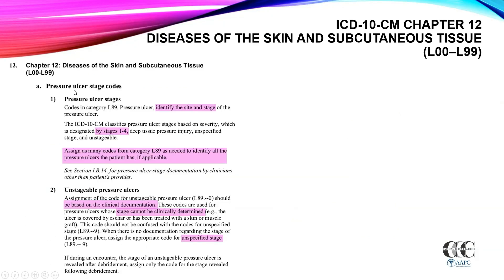Let's take a look at our coding guidelines surrounding ulcers. First, pressure ulcer stage codes: codes in category L89 pressure ulcer identify the site and stage of the pressure ulcer. ICD-10-CM classifies pressure ulcer stages based on severity, designated by stage 1 to 4, deep tissue pressure injury, unspecified stage, and unstageable. Assign as many codes from category L89 as needed to identify all the pressure ulcers the patient has, if applicable.